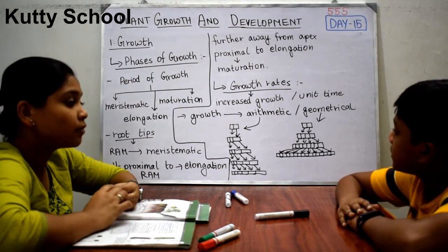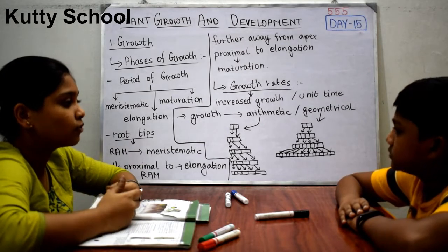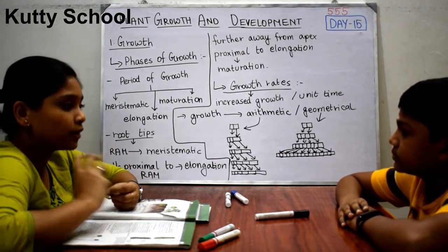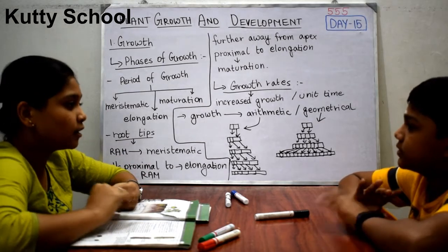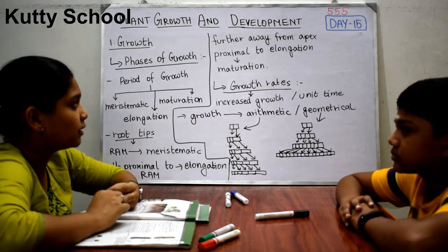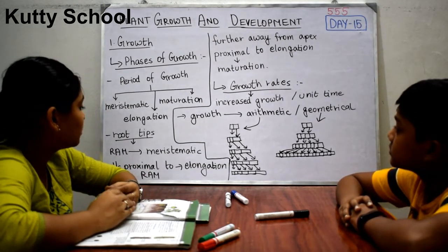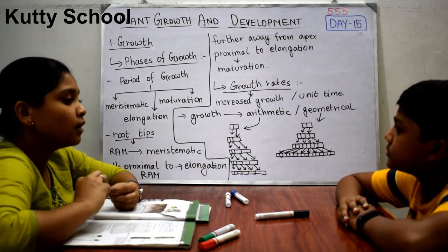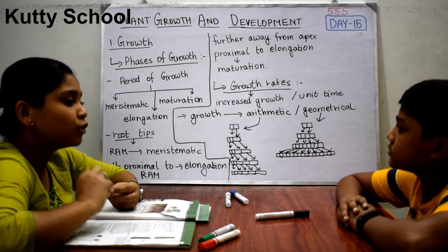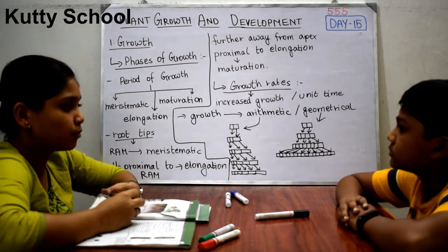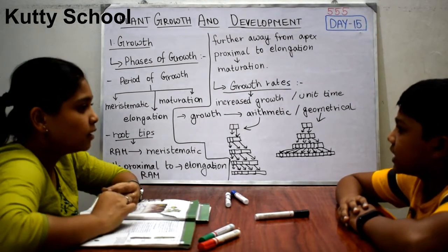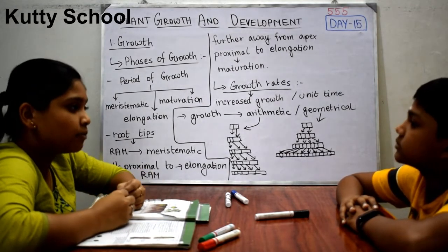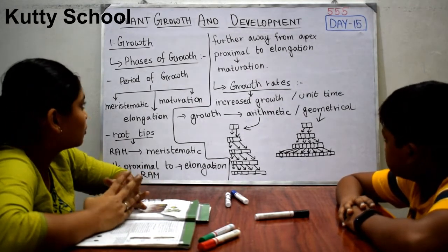In each meristematic, elongation, and maturation region, the morphology of cells differs — including the amount of protoplasm, cell walls, and everything. In the meristematic phase, cells have a large number of proplastids and are actively dividing. These characteristics were studied in the anatomy of flowering plants.